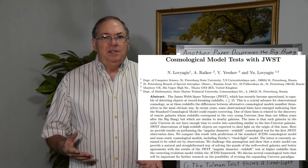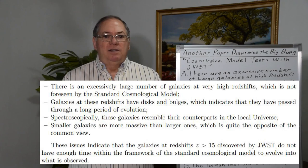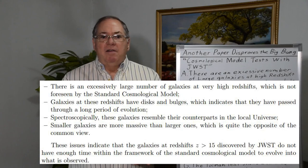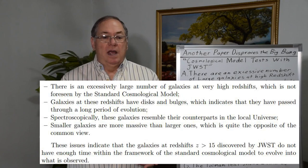This paper runs through some key points in just the introduction. There are an excessive number of large galaxies with high redshift. There are high redshift galaxies that have disks and bulges, indicating that they're old galaxies.